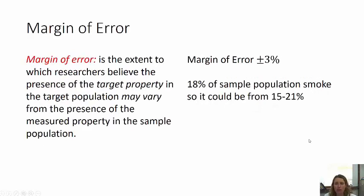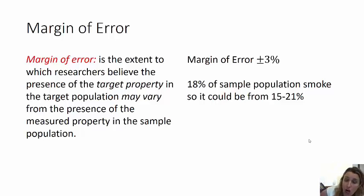Another thing to be aware of is a margin of error. The margin of error is the extent to which researchers believe the presence of the target property in the target population may vary from the presence of the measured property in the sample population. A typical 3% margin of error — that's the margin of error in Gallup polls. For example, if your statistics say that 18% of the sample population smoke, it could be that anywhere from 15% to 21% of the target population has the target property — 15% to 21% of Americans smoke.